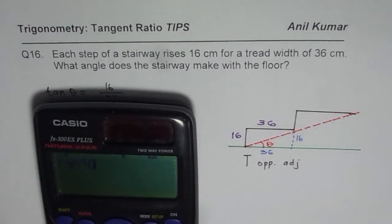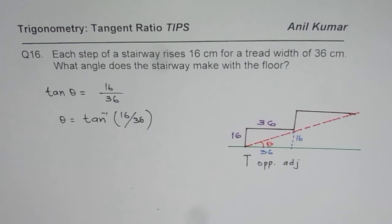So shift tan inverse and we need to find 16 over 36. 16 divided by 36, bracket close equals to 23.96.